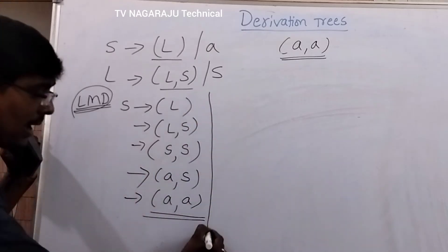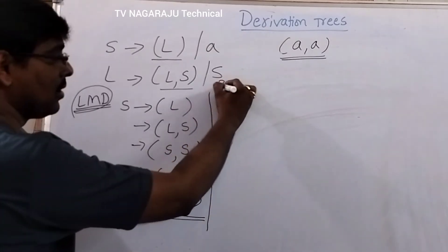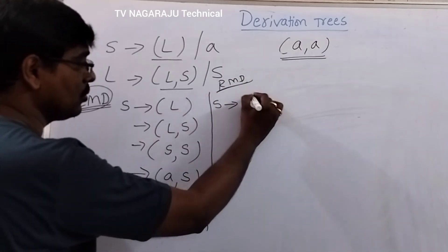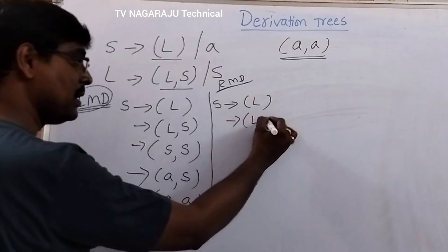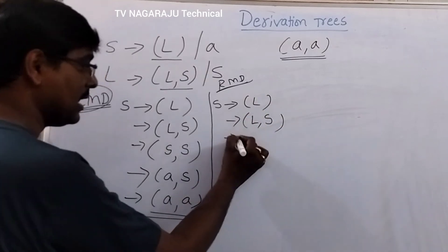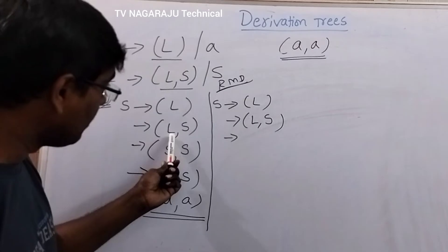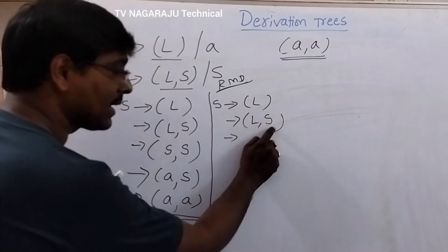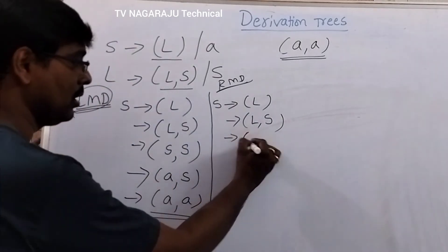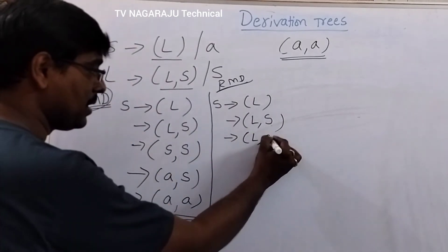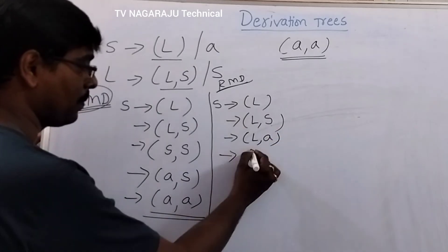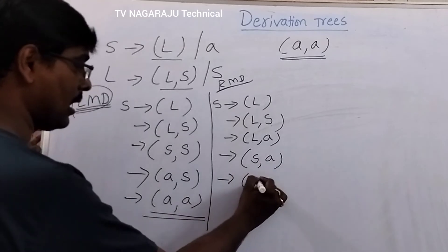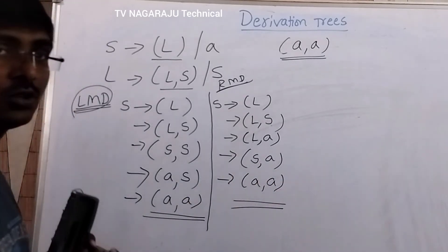Parallelly, I am writing the rightmost derivation also. S → (L), then L is replaced with L,S giving (L,S). Here we have the difference: in leftmost derivation I replace the left-side non-terminal, but in rightmost derivation I replace the right-side non-terminal. So S in (L,S) is replaced with a giving (L,a). Now this L is replaced with S, giving (S,a), and S is replaced with a giving (a,a). This is the rightmost derivation.